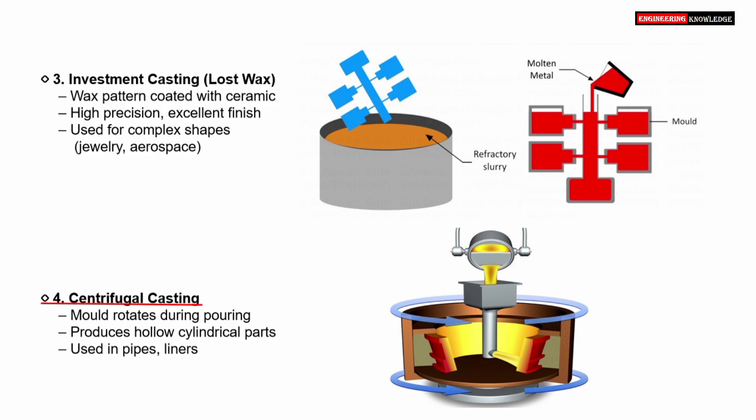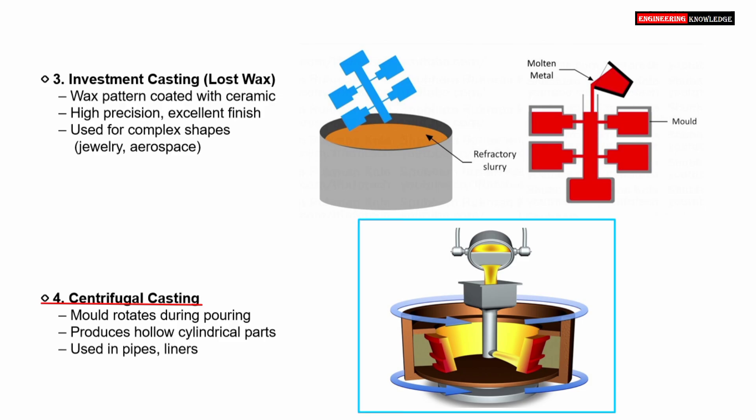Centrifugal casting involves pouring molten metal into a rotating mold. The rotation forces the metal outward against the mold walls using centrifugal force. The spinning action helps in achieving a uniform wall thickness and eliminates impurities toward the center. This technique is especially suitable for hollow cylindrical components such as pipes, tubes, and liners, and is widely used in industrial applications.